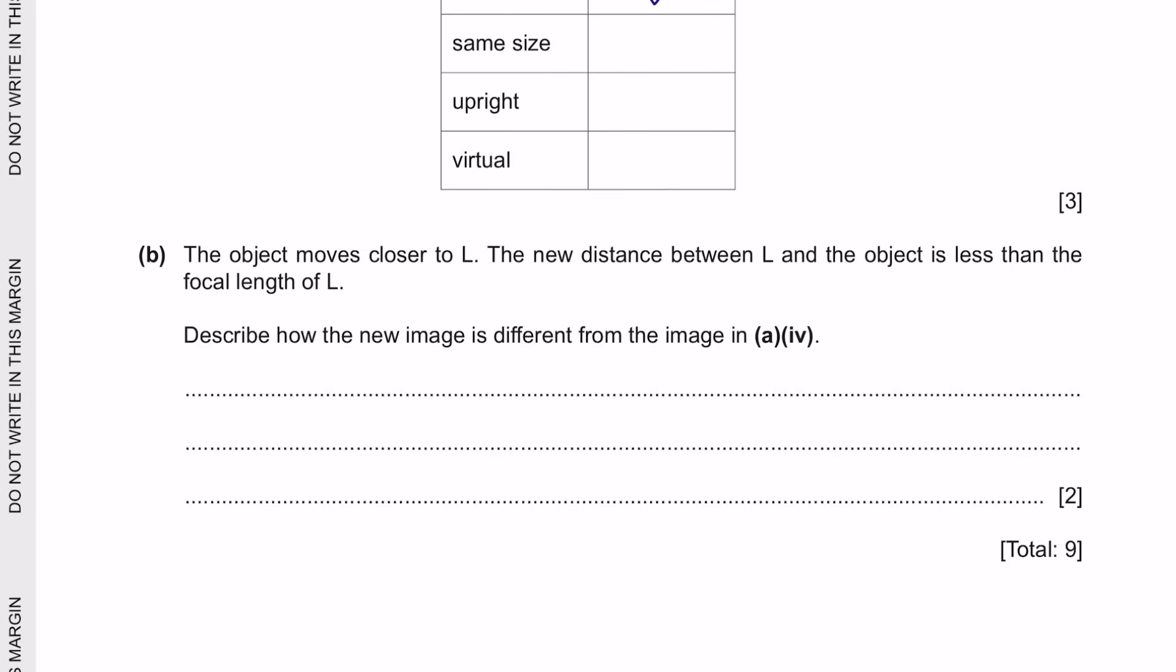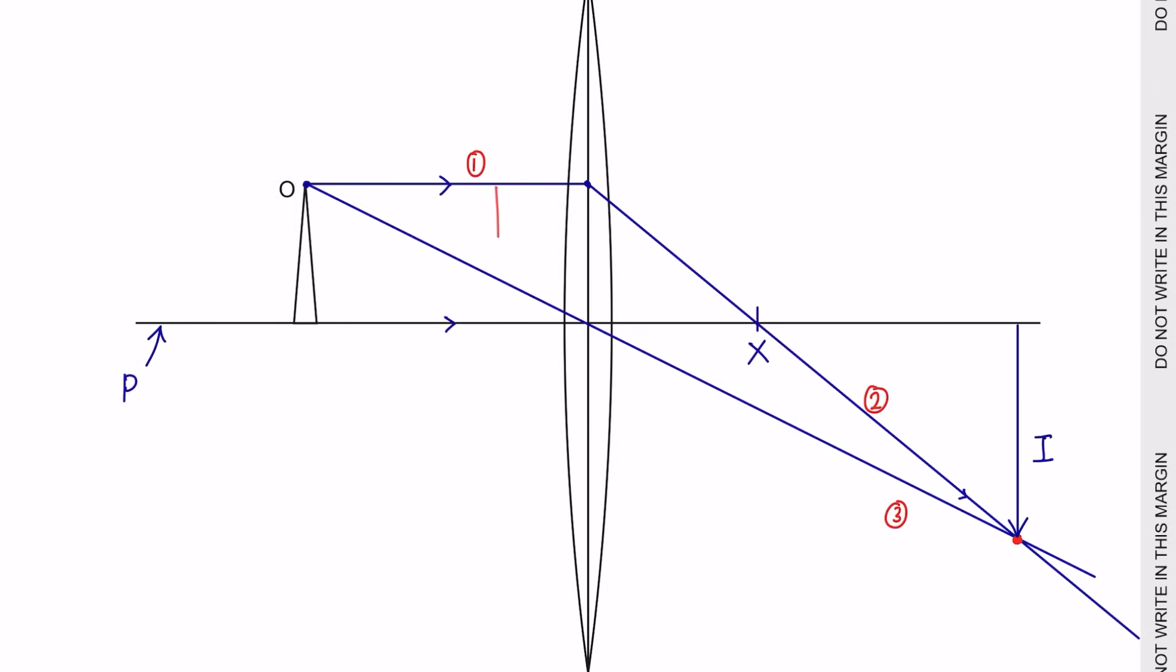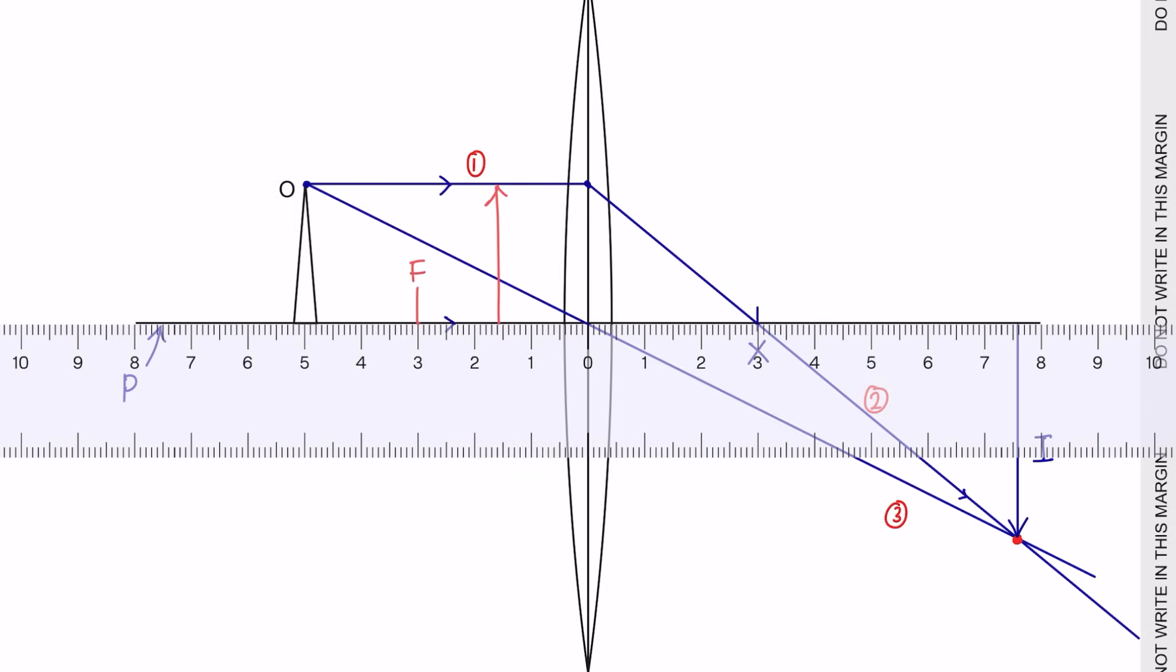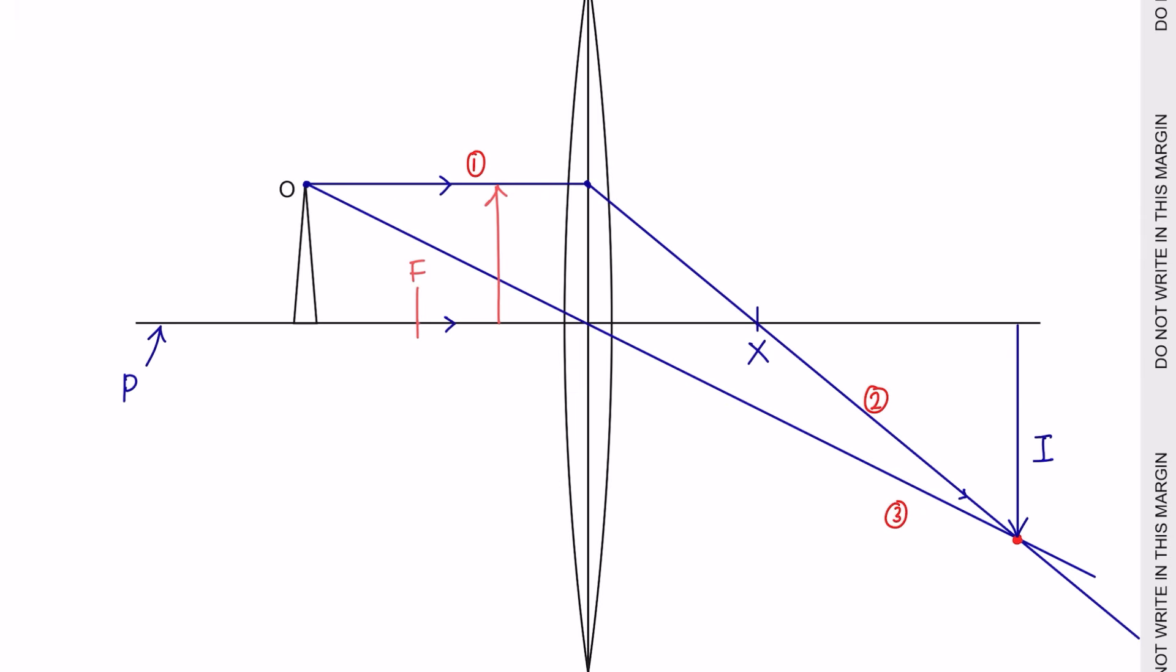Next question part B. The object moves closer to L. The new distance between L and the object is less than the focal length. Describe how the image is different from the image in part A 4. So if the object moves closer to the lens, the focal point is here. And it says that the object is closer to the lens compared to the focal point. So we can just estimate that it's somewhere here.